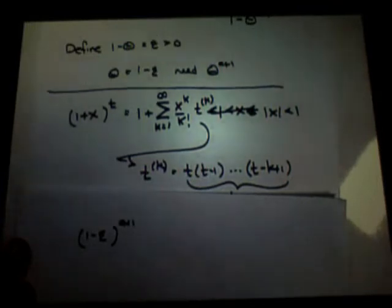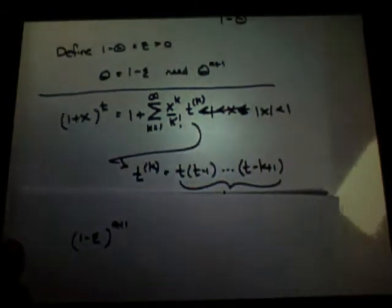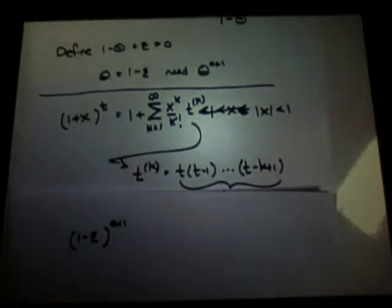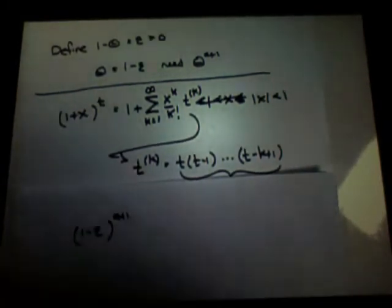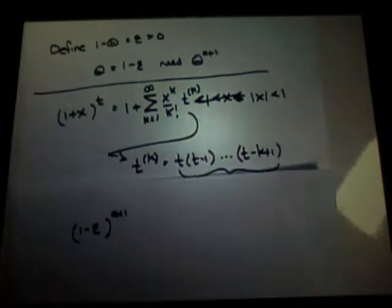I just want the first two terms, because what I'm going to do is argue that as epsilon gets small, all the rest is non-consequential. So what's one minus epsilon to the a plus one using the generalized binomial theorem?